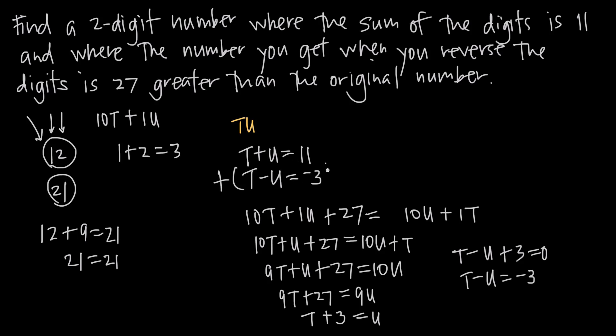So when we add these together, the result that we're going to get is going to be t plus t which is 2t. u plus a negative u is 0. That goes away. And then 11 plus a negative 3 or 11 minus 3 is going to be equal to 8.